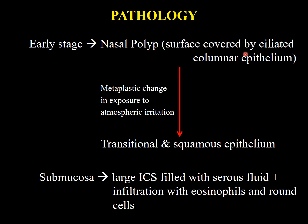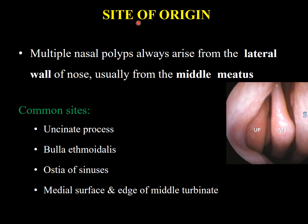In early stages the nasal polyp surface, which is covered with ciliated columnar epithelium, undergoes metaplastic change in response to atmospheric irritation and converts into transitional and squamous epithelium. The submucosa shows large intercellular spaces filled with serous fluid and infiltration with eosinophils and plasma cells.